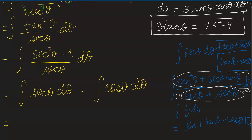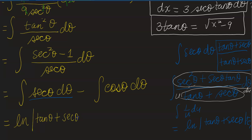Combining the two results, the antiderivative in terms of theta is: ln of the absolute value of (tangent theta plus secant theta) minus sine theta plus C.